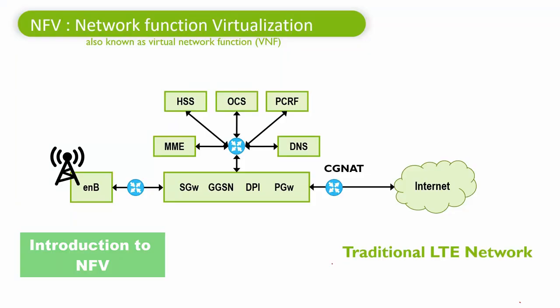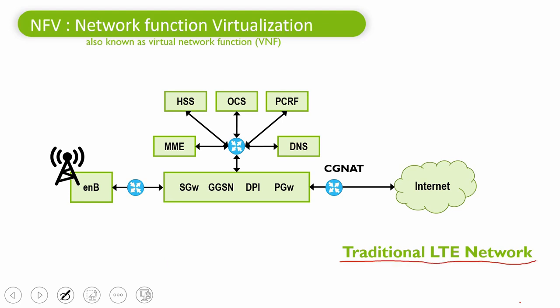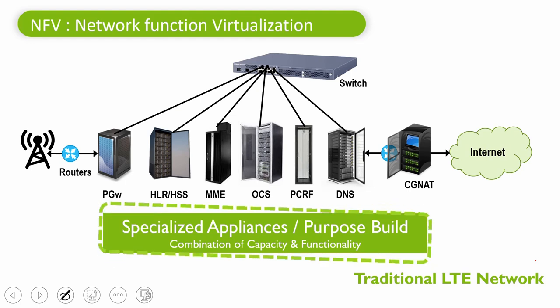This is a classic 4G network deployed across mobile operators globally. We will see how this typical traditional 4G network, the way it has been deployed, is going to be virtualized. You can see that all these nodes are deployed on traditional hardware, which we also call purpose-built hardware — specialized appliances or hardware meant to perform very specific functions.